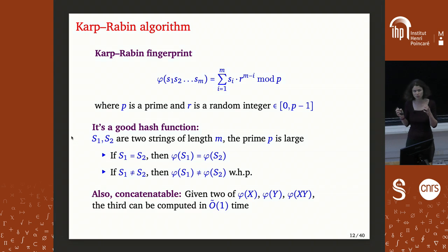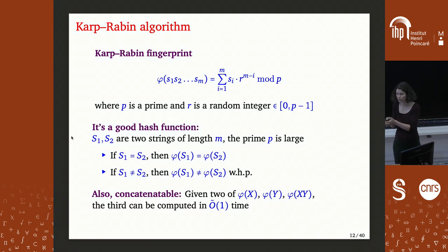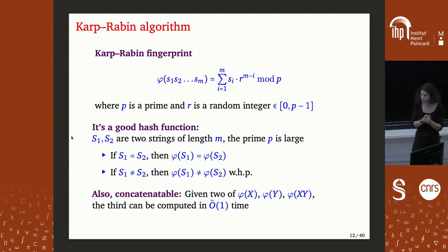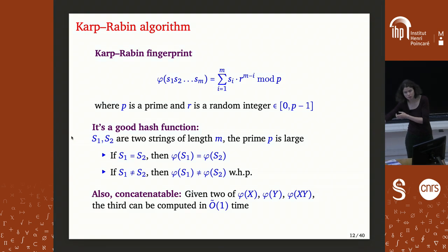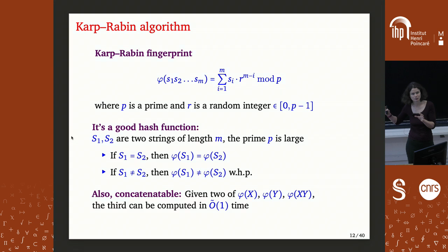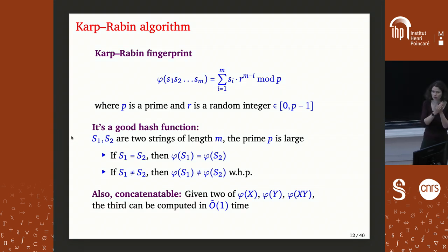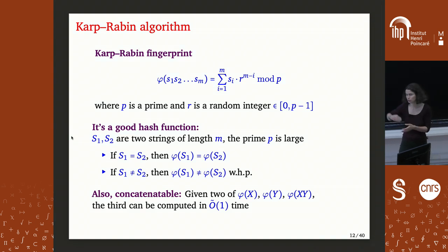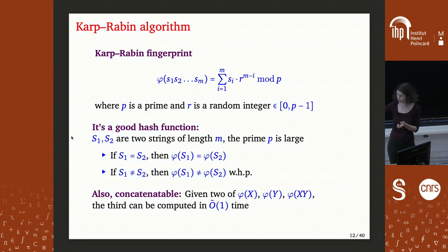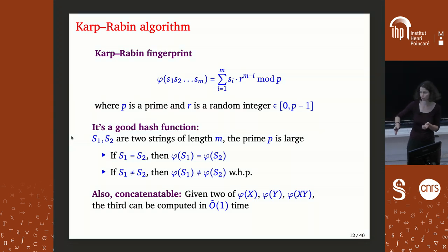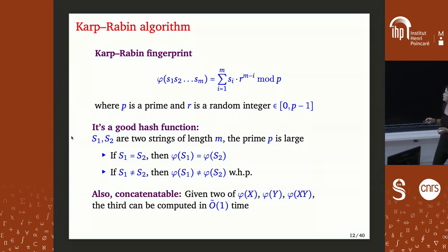One very important property of this fingerprint is that it is concatenatable. If I give you the fingerprints of strings X and Y, you can compute the fingerprint of their concatenation XY efficiently. Conversely, given the fingerprint of XY and the fingerprint of X, you can compute the fingerprint of Y efficiently.